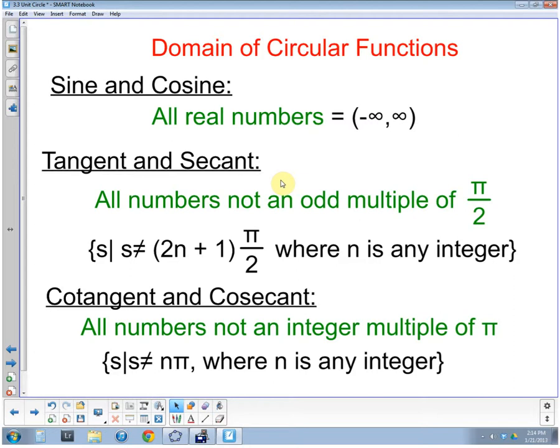And we can write that mathematically when we put this parenthesis, which means up to but not including negative infinity, to positive infinity but not including infinity because it's not a real number. You can't include it. So we have this notation here that shows us that we can use all real numbers for the sine and the cosine.